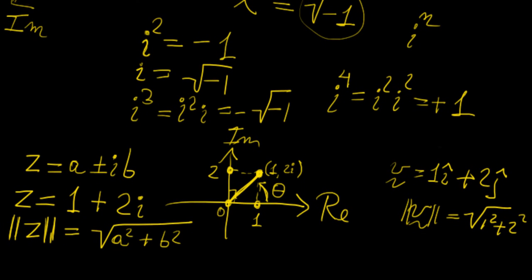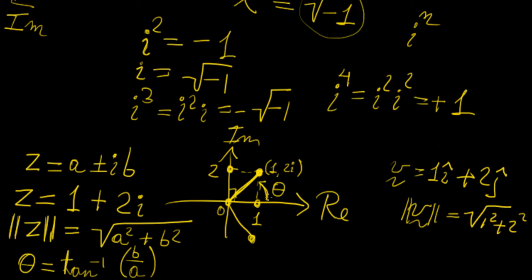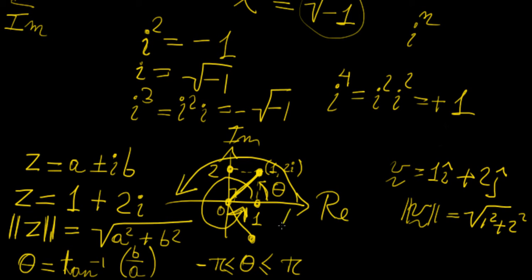The angle is defined as the inverse tangent of b over a, because we have a rise along the imaginary axis (which is b) and a run along the real axis (which is a). For complex numbers, we define the angle theta within the boundaries of minus pi to pi, rather than 0 to 2 pi as you would for a normal angle. It can go in either direction, and we'll see that this becomes quite convenient when we define things more rigorously.